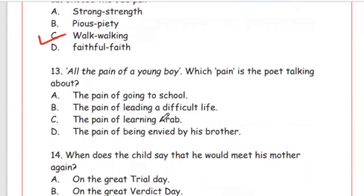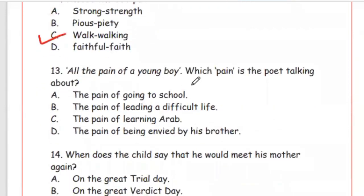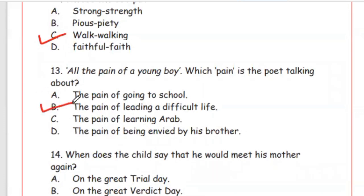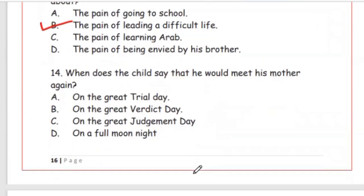Question 13: 'All the pain of a young boy' — which pain is the poet talking about? Options: the pain of going to school, the pain of leading a difficult life, the pain of learning Arabic, the pain of being envied by his brother. The answer is Option B, the pain of leading a difficult life.